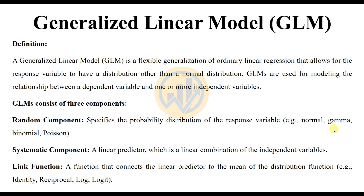The distributions supported are normal, gamma, binomial, and Poisson. The systematic component is a linear predictor, which is a linear combination of the independent variables. The link functions connect the linear predictor to the mean of the distribution. Examples of link functions include identity, reciprocal, log, and logistic.